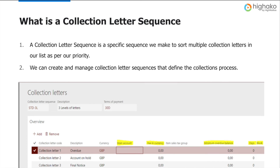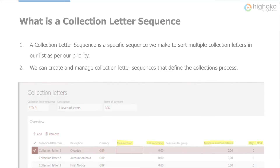Now that we know what a collection letter is, let's understand what a collection letter sequence is. A collection letter sequence is just a way we sort more than one collection letters in our list as per our priority. Collection letters in a sequence may have a custom text for the letter, a specified number of days overdue before the letter gets generated, the fee amount, and the account associated with the debt.